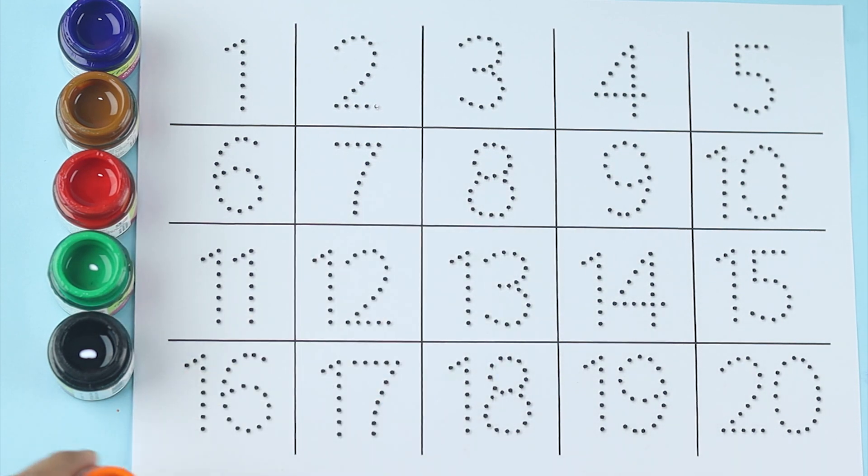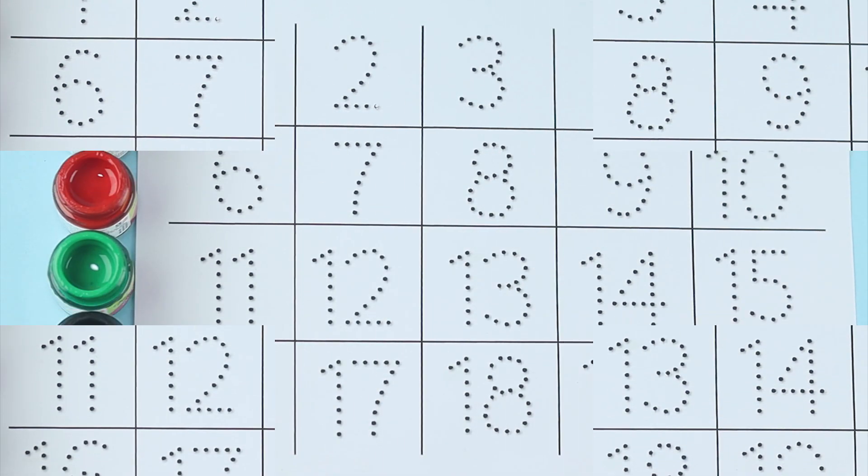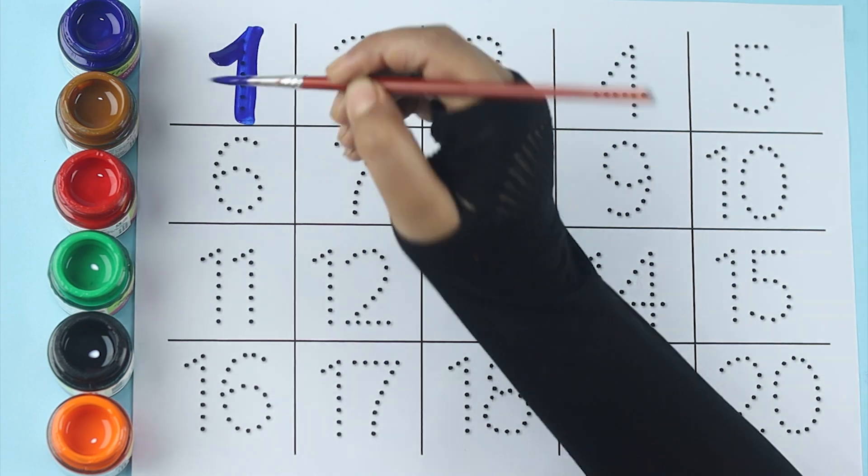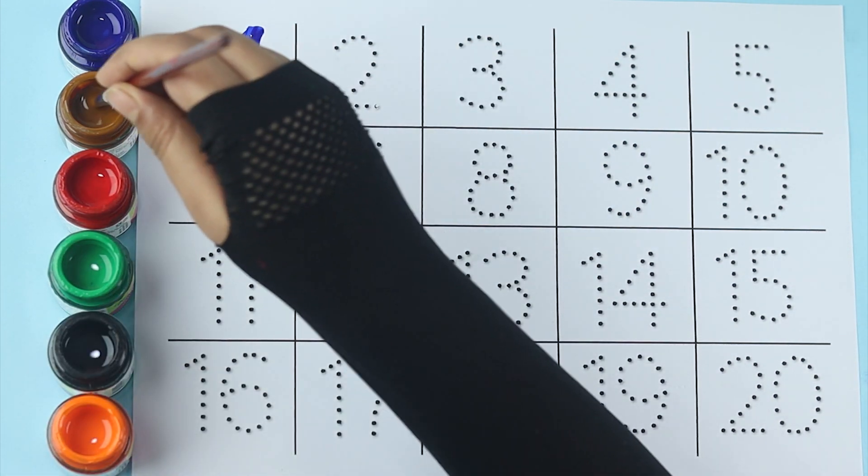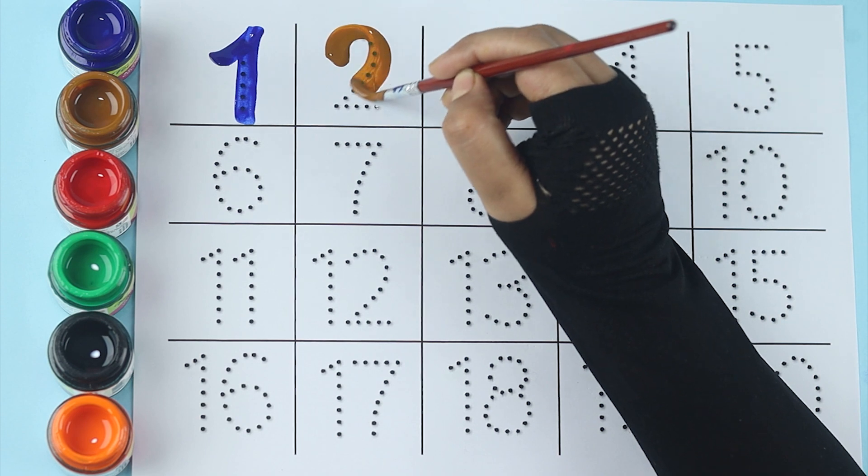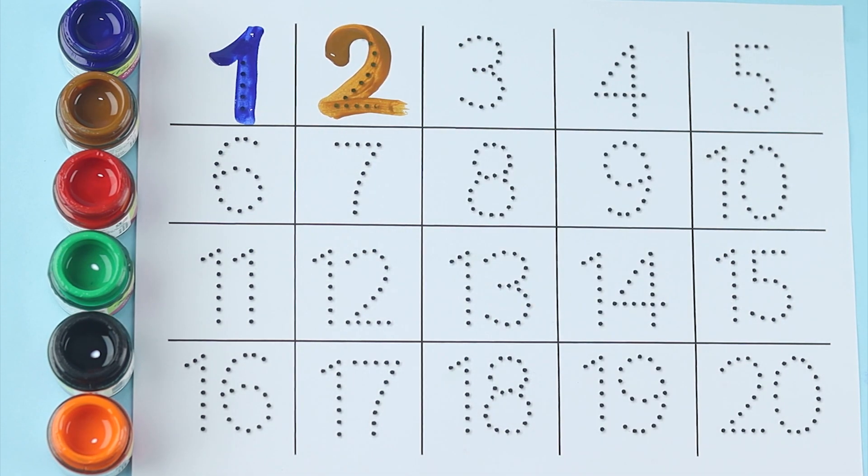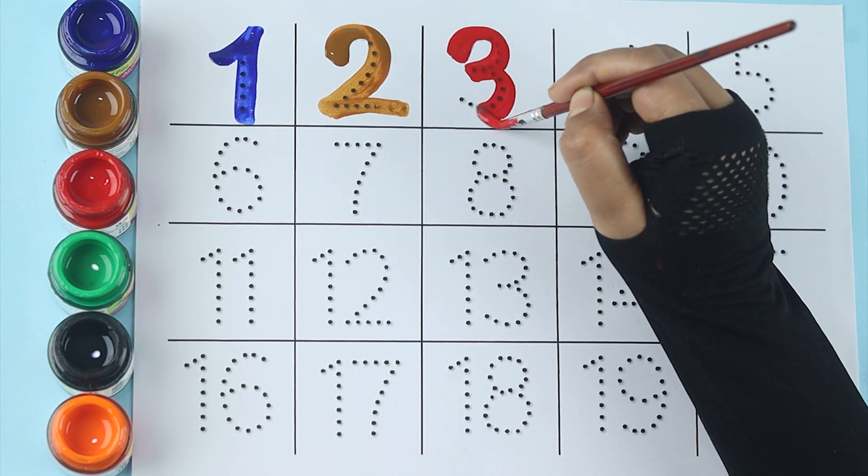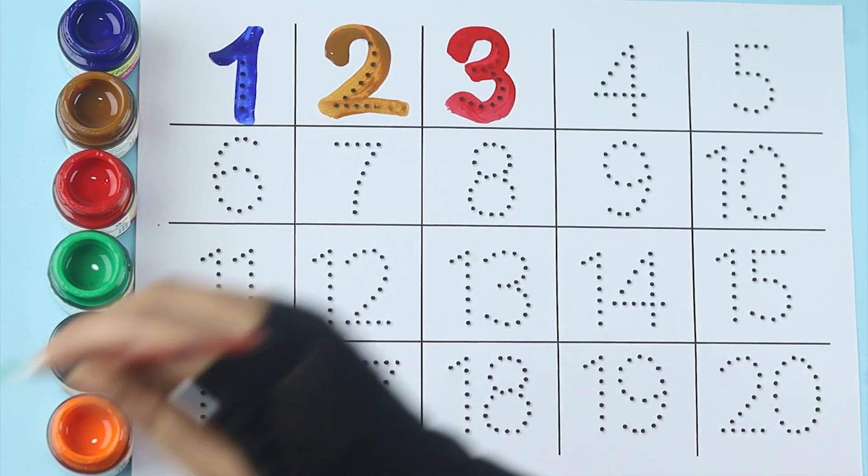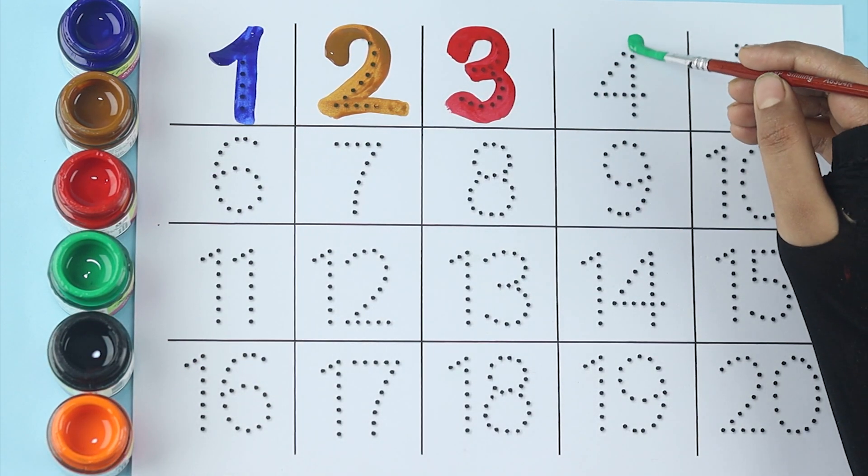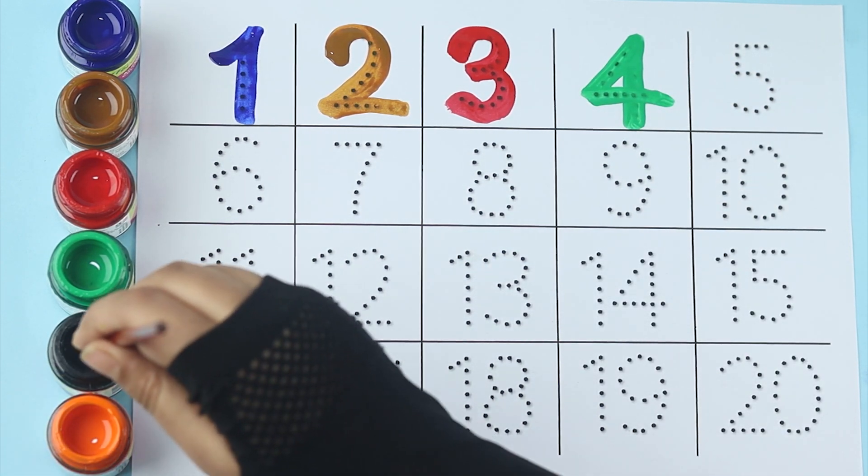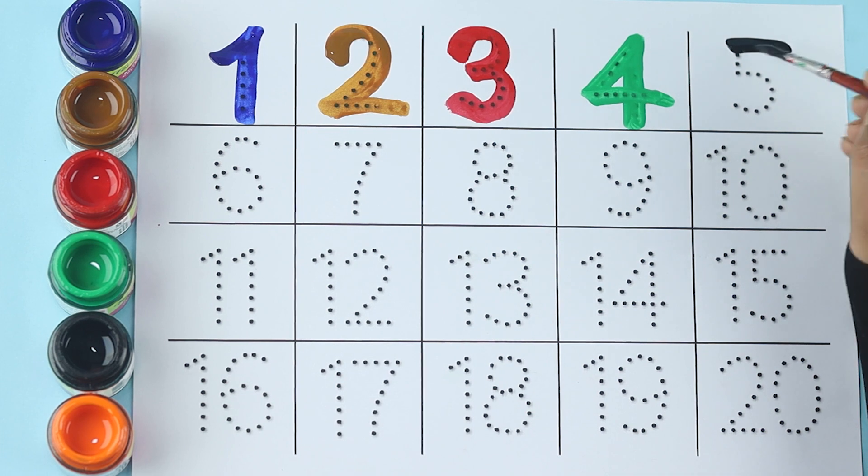Orange color, orange color. Blue color one. Brown color two. Red color three. Green color four. Black color five.